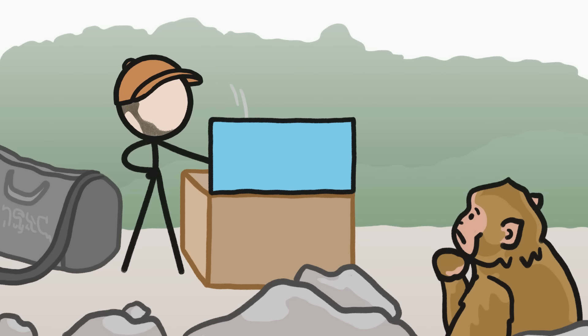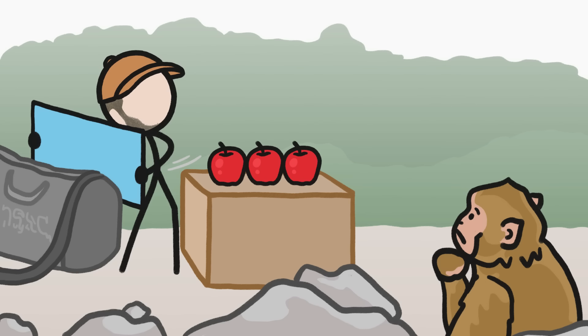I'd take an apple out of the bag and dramatically lower it behind the poster board. Then I'd take out a second apple, and then a third. Finally, with a flourish, I'd remove the poster board, revealing the apples to the monkey.